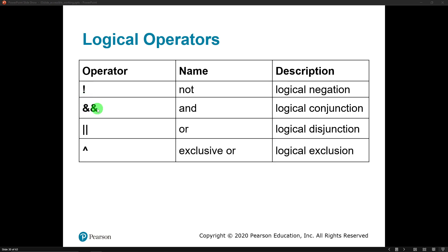There's also the AND operator, which is two ampersands put together, and the AND operator is a logical conjunction. A conjunction is something that gets joined together — both things have to be true. This has to be true and that has to be true in order for the entire Boolean expression to be true.